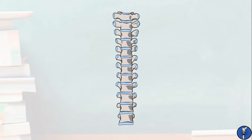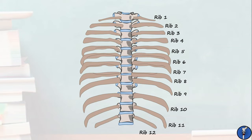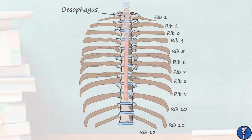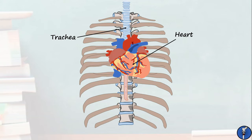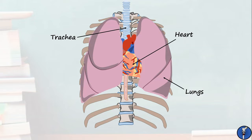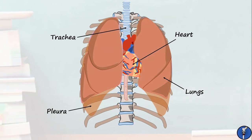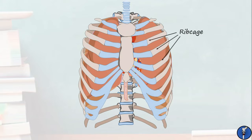First, let's make sure we're all on the same page when talking about the major contents of the thorax. There are 12 thoracic vertebral bodies, each of which produces a rib numbered accordingly. Running most posterior and simply passing through on its way to the stomach is the esophagus. Anterior to this, we have the trachea, which splits to carry air to both lungs. Then we have the heart, which sits anterior to the trachea. And the two lungs, which envelop the heart on both sides. The lungs are surrounded by the thin pleural membranes, and all of these structures are enclosed by the anterior parts of the first 10 ribs, which form the ribcage.